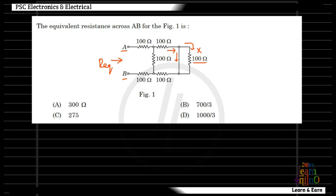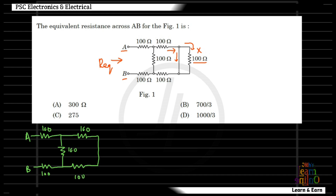Let's go back to the network. The short circuit across the 100 ohm means it is bypassed. Then the 200 ohm and 200 ohm are in series. These are the two series resistors.